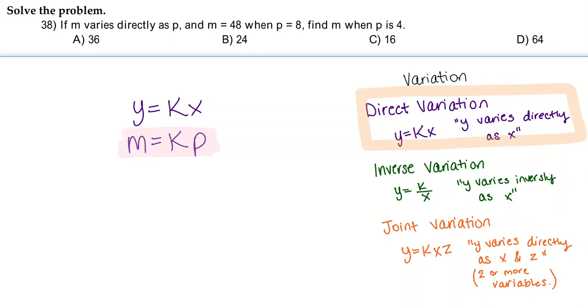So now let's substitute in our values. Our m equals 48 and our p equals 8. So now we're going to look for our k, which stands for constant, and that just means that once we solve what k is, for the rest of this situation, k is always going to equal that term.